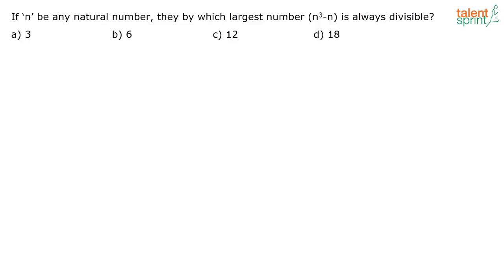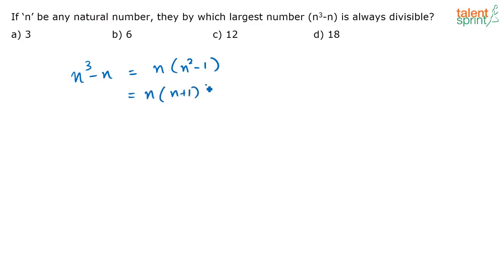If n be any natural number, then by which largest number is n³ - n always divisible? This is a very good question. We have n³ - n. I can write this as n(n² - 1), taking n out, or I can write it as n(n+1)(n-1), which gives us (n-1)(n)(n+1).